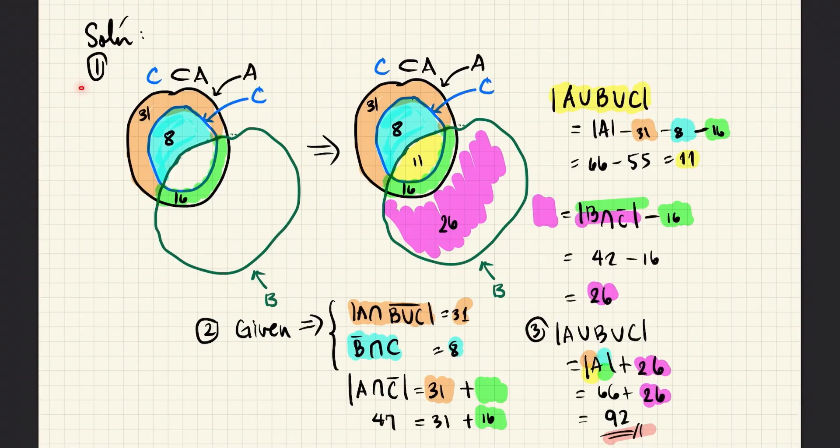Here, this is step one. We first draw the Venn diagram. We notice that this condition, that C is a subset of A, means that C must be drawn entirely inside of A.